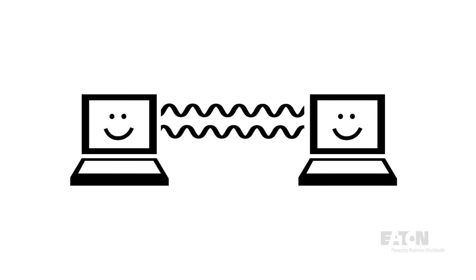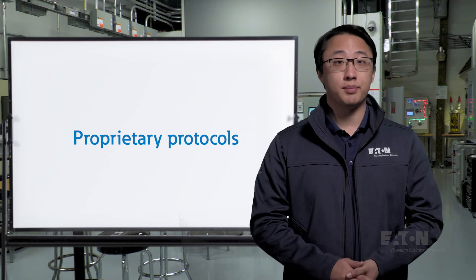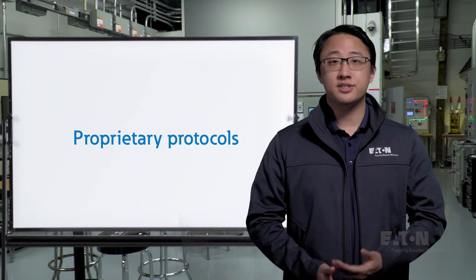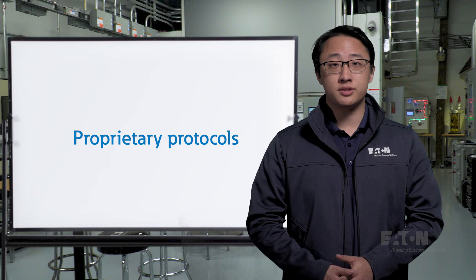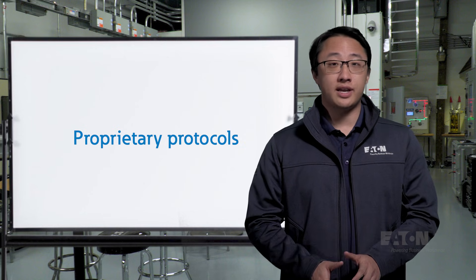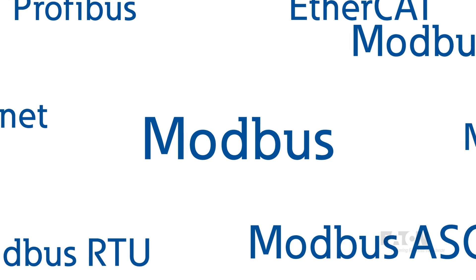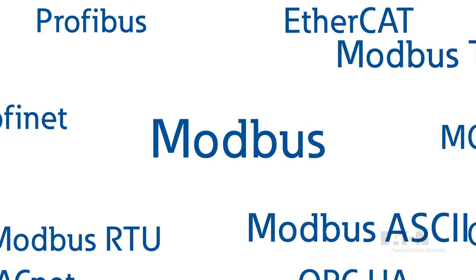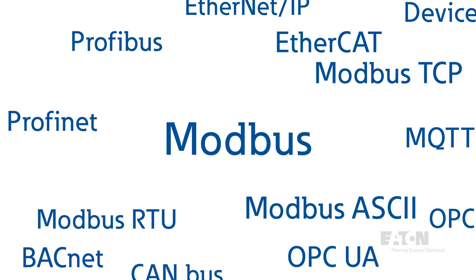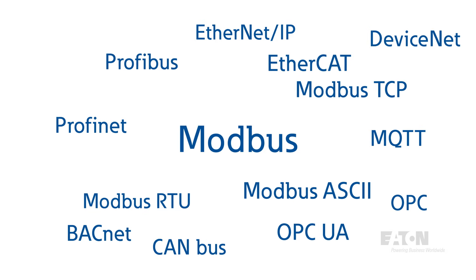Some devices only speak one language, some devices speak multiple. A lot of these protocols used to be proprietary by company, which made it difficult to get systems to cross-talk to each other, to the detriment of the end user. This changed in 1979, when Modbus was published as the first openly available communication protocol to help standardize the controls industry. Since then, open publishing has become standard for new protocols and given rise to a variety of dialects.